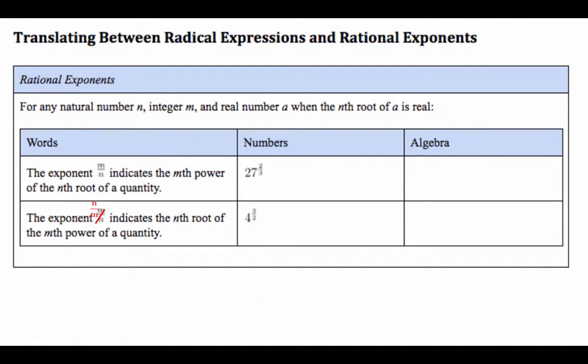Alright, so we'll be translating between the radical expression and the rational exponents. I have a little typo here. That should be n over m, not m over n.